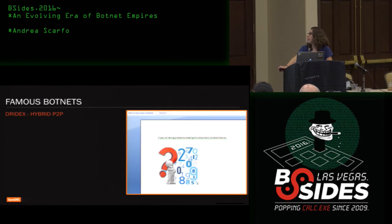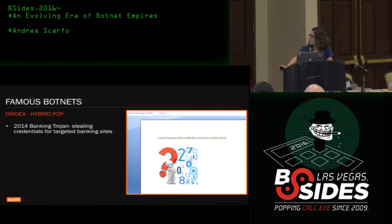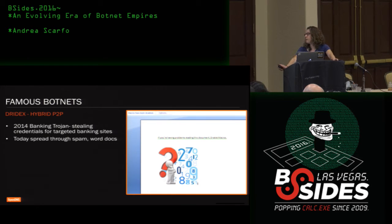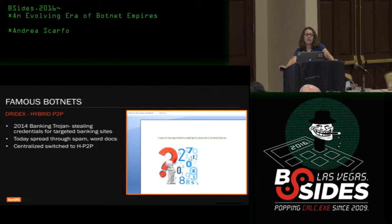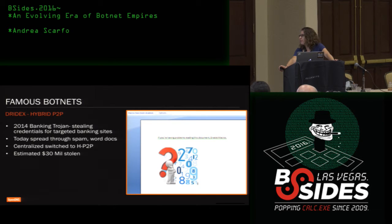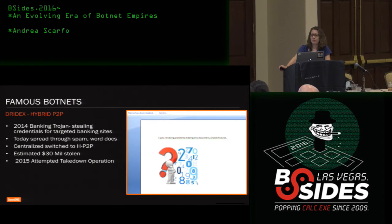Famous bots — Dridex uses the hybrid peer-to-peer network architecture. First seen in 2014, mostly stealing credentials to targeted banking sites. Today it's mostly spread through spam and embedded Word documents with malicious macros. It originally had a centralized network architecture and switched to the more resilient hybrid peer-to-peer. The estimated amount stolen is around 30 million dollars, and it was the target of an attempted takedown operation in 2015, which wasn't very successful.